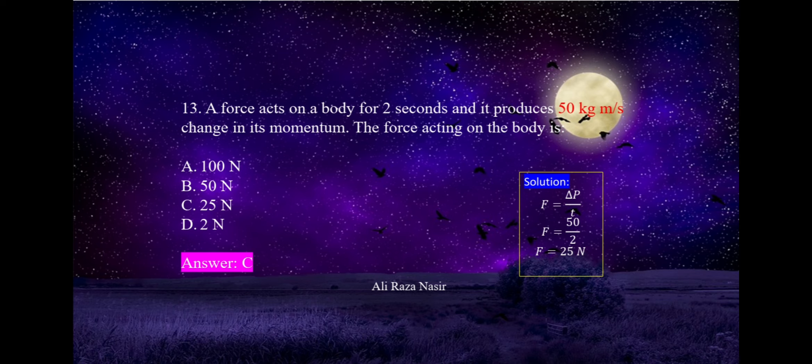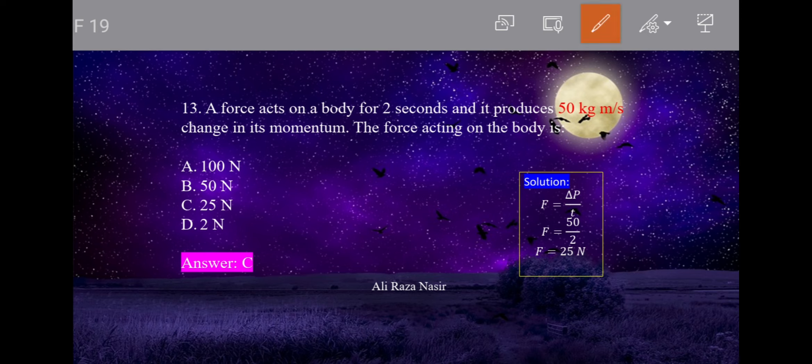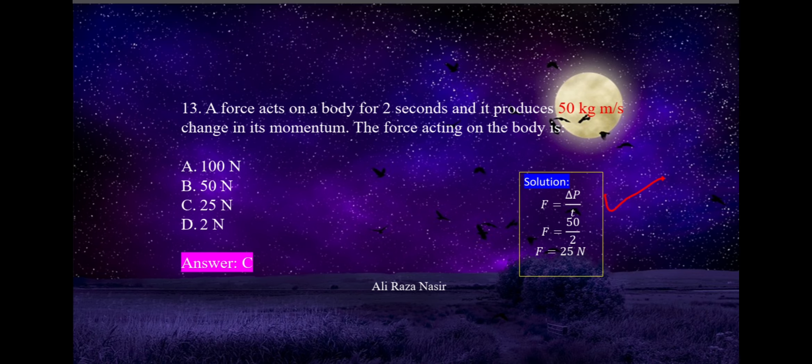A force acts on a body for 2 seconds and produces 50 kg·m/s change in momentum. The force acting on the body — using the formula: F = change in momentum / time = 50 / 2 = 25 N. Option C is correct.